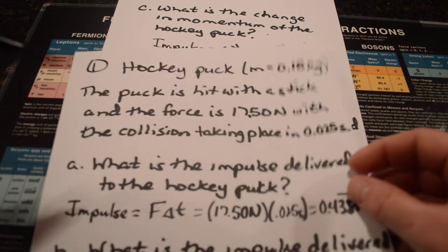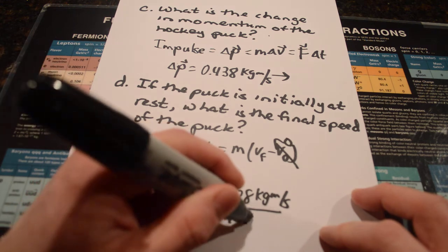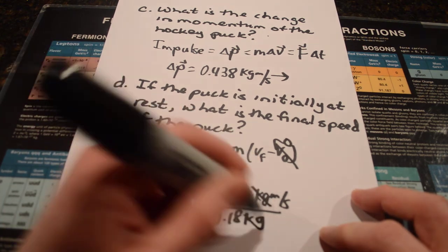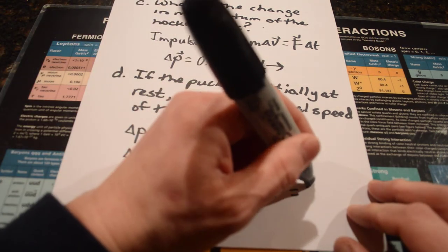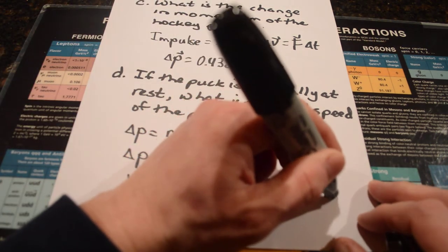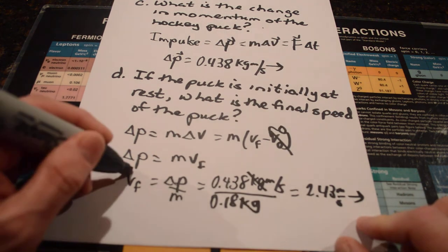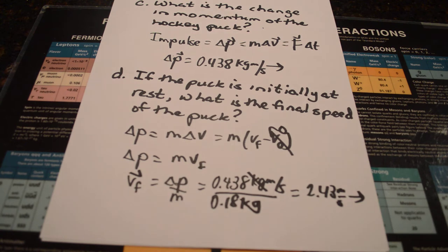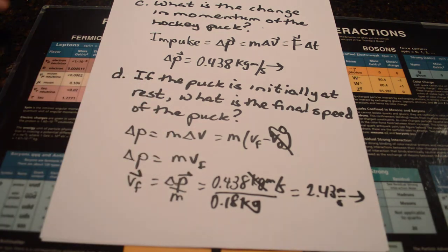The mass was given in the problem, I'm not sure if you remember seeing it, it's up on the top, 0.18 kilograms. So, if we take 0.18 kilograms, then the kilogram units cancel. And then that leaves us with an answer of 2.43 meters per second. It's going to have the same direction, because it is a vector, as the change in momentum was. So, it's going to be in that same direction to the right. So, I hope that problem makes sense.